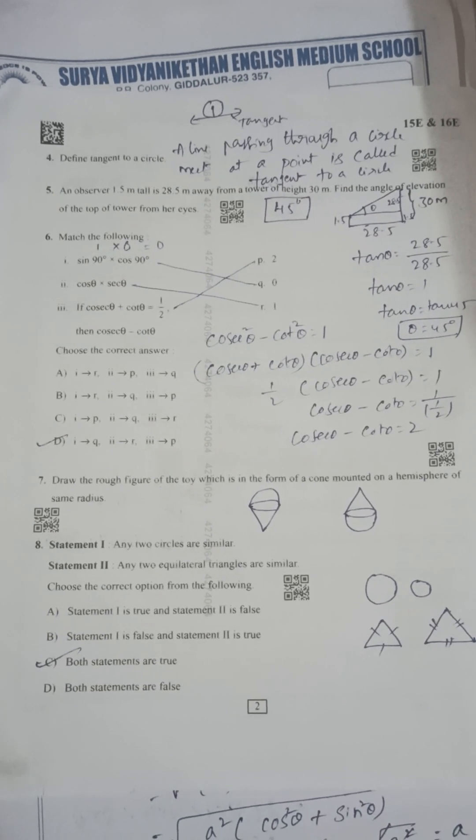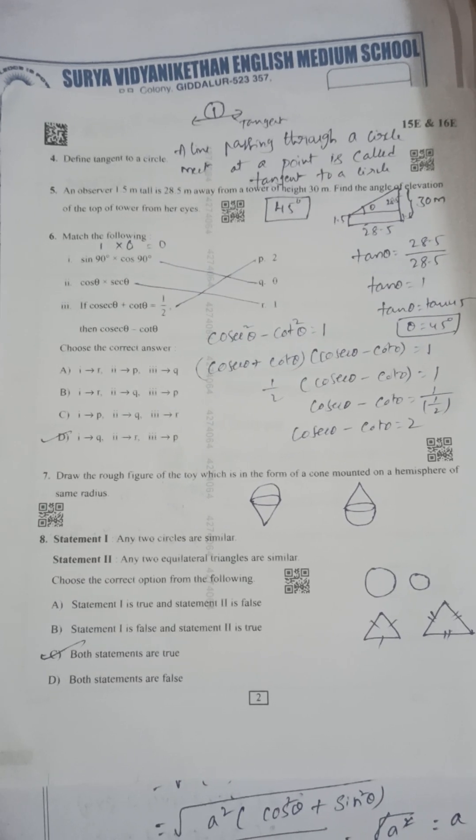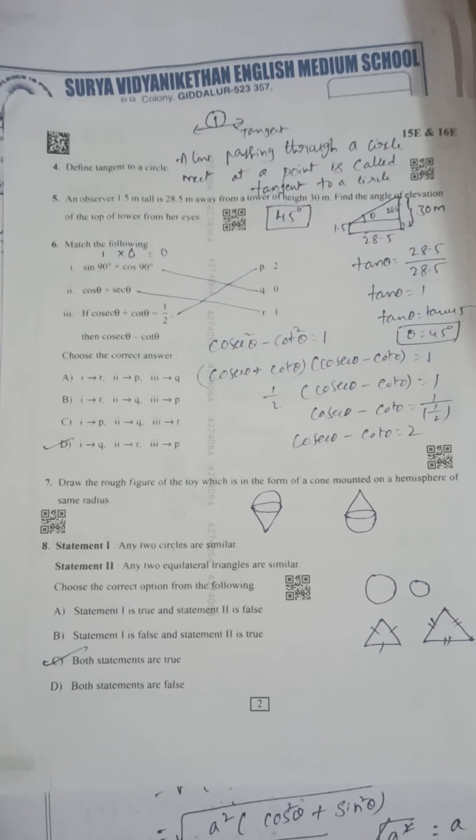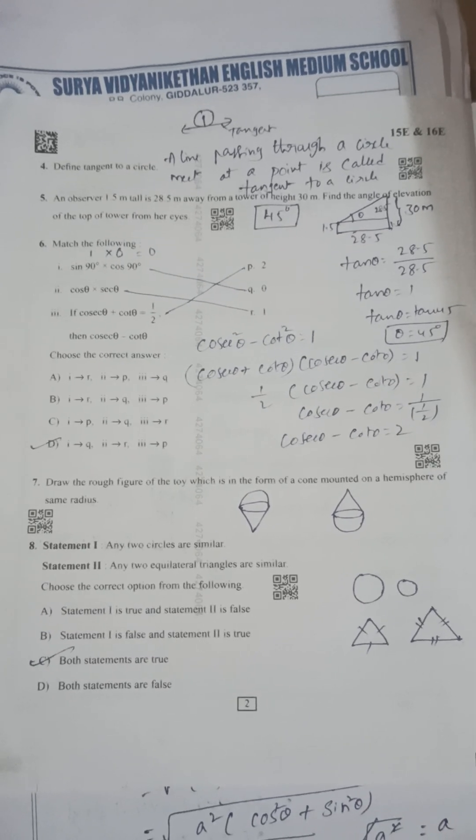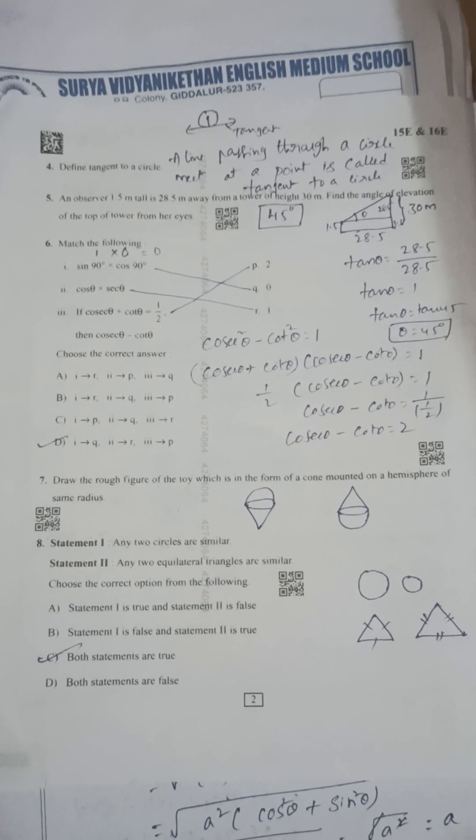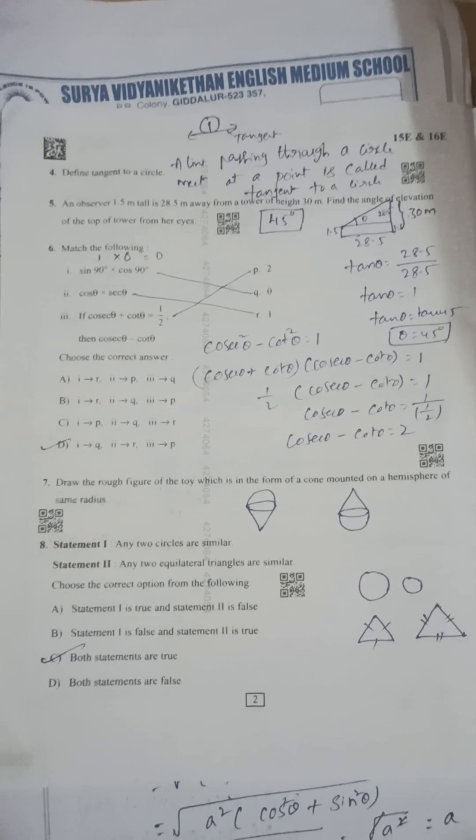Next, match the following: sin 90 into cos 90 is 0, cos theta into secant theta is 1. If cos theta plus sin theta is equal to 1 by 2, then cos theta minus sin theta is equal to 2. So the option is D. Let's draw the rough figure of the toy which is in the form of cone mounted on a hemisphere.